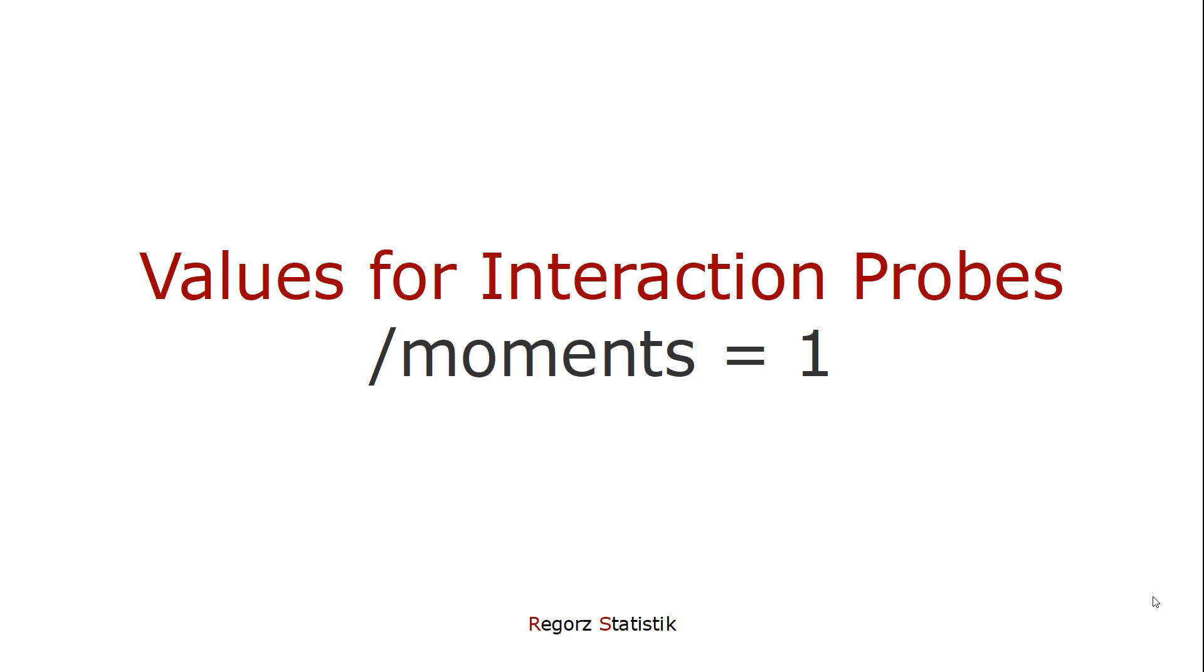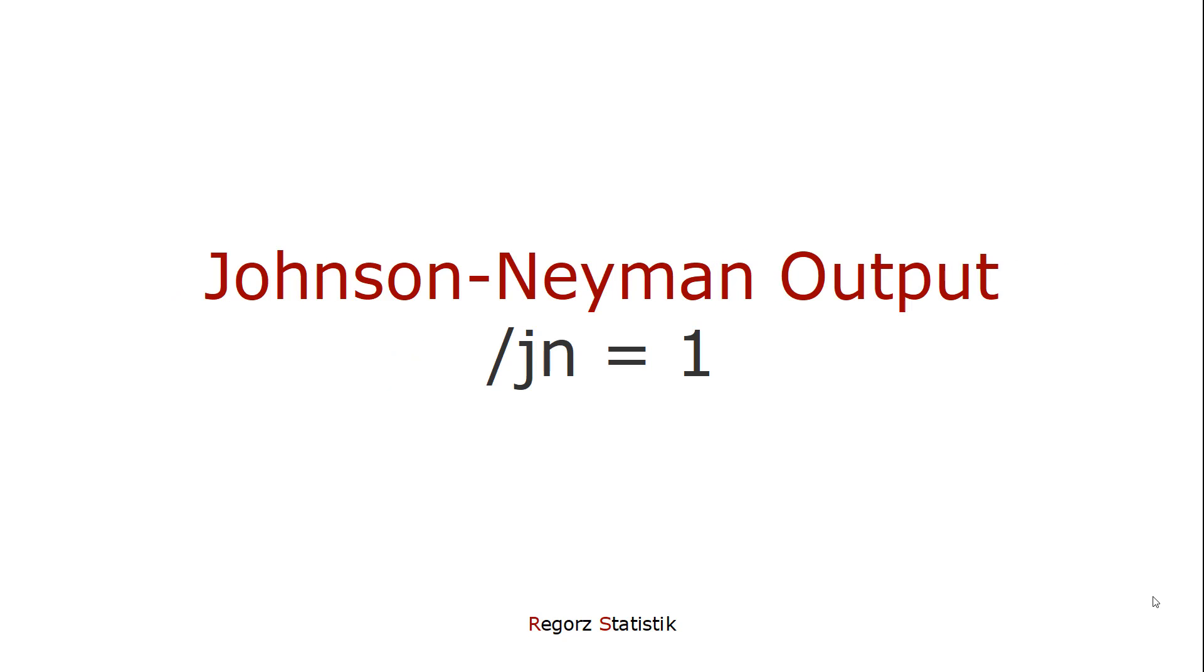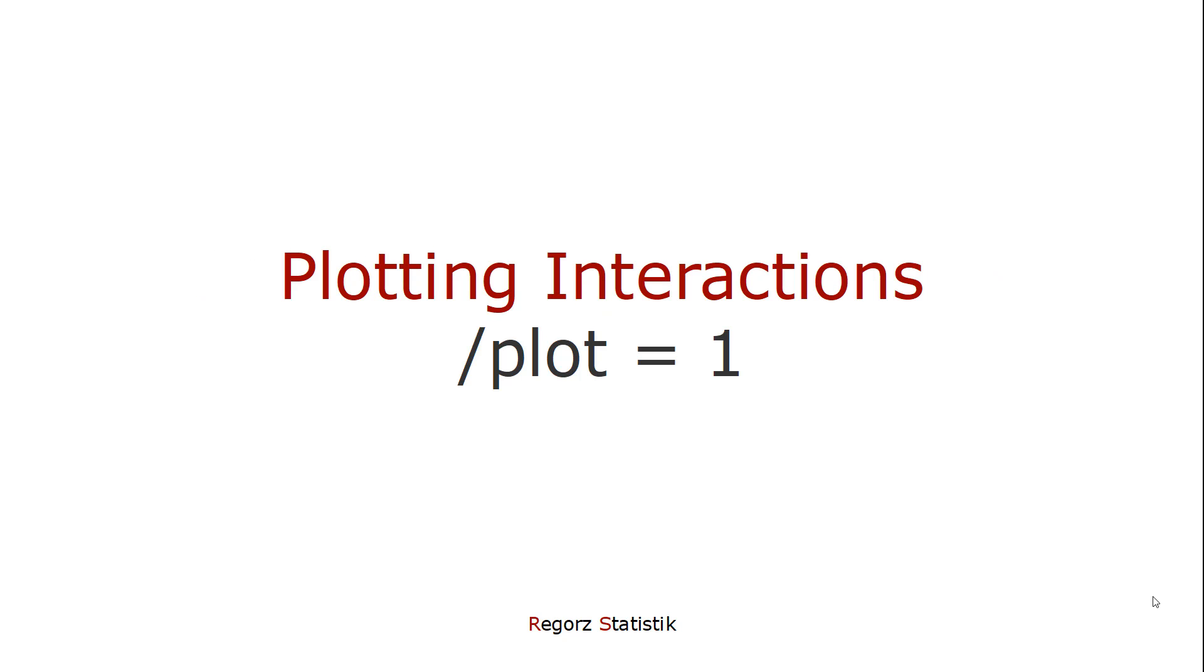You could request a Johnson-Neyman output, by setting JN to 1. And you could request a plot for the interaction. Then, as part of the output, you get a short SPSS syntax. And if you run the syntax, you get a graph for the simple slopes.